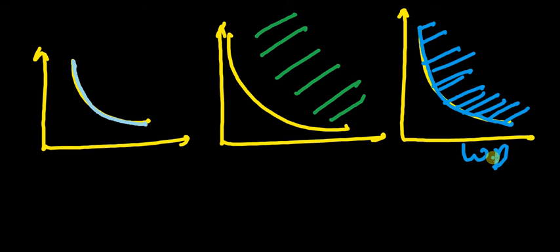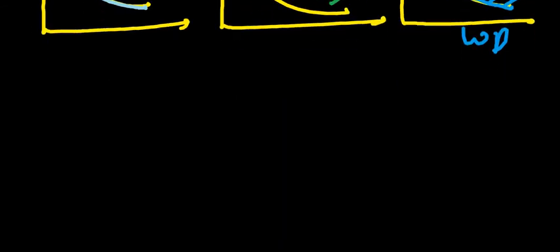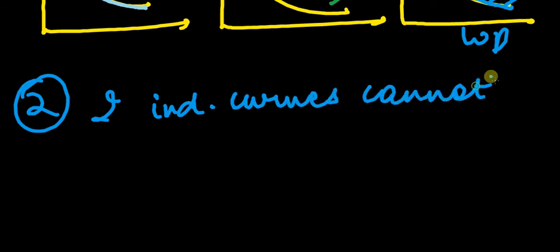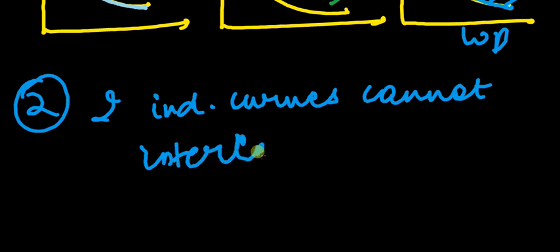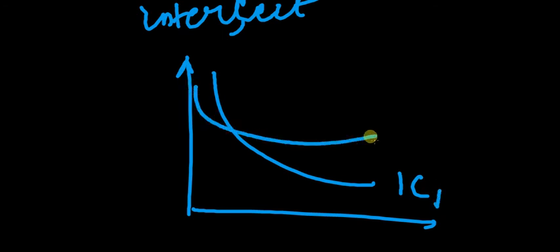Now let's talk about the properties of the indifference curve. First: higher the indifference curve, more is the utility. Second property: two indifference curves cannot intersect. Suppose I have one indifference curve and another indifference curve, and they intersect at point A. Now consider two points — point B and point C — and compare B and C.